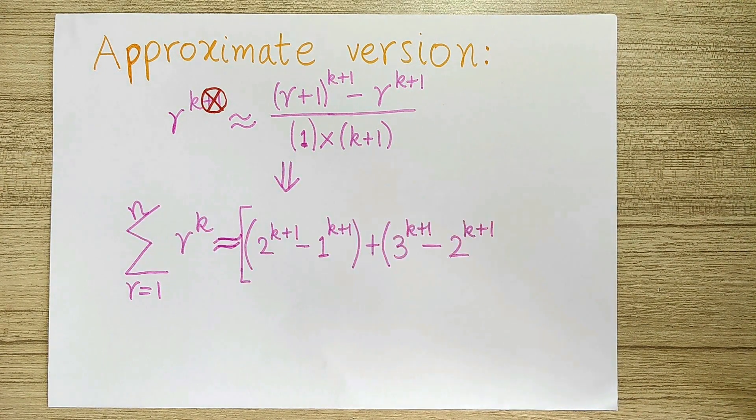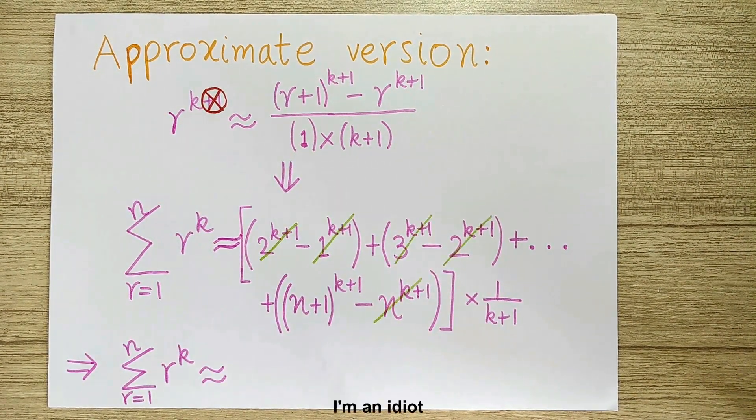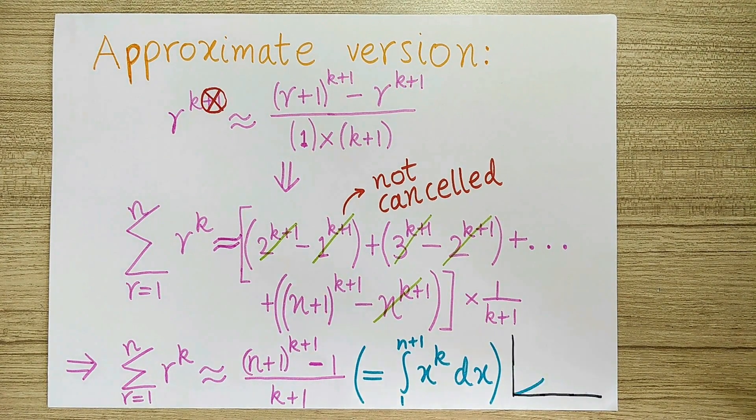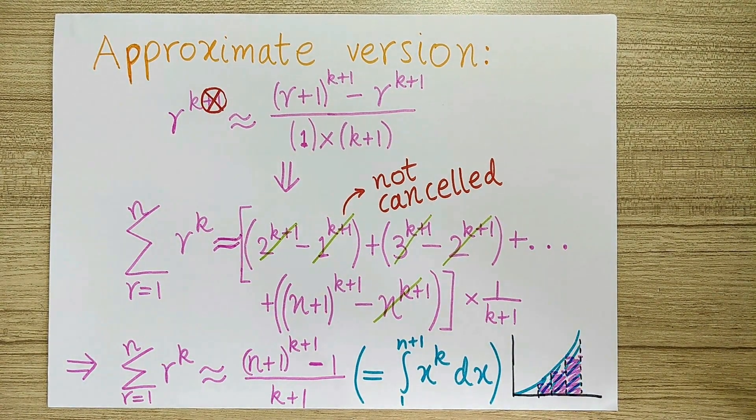Plugging this in gives us a telescoping sum which is very similar to the one which we got previously, and this gives us an approximate formula for the sum which we were looking at. You may notice that this approximate formula can also be written as an integral and this also has a nice geometric interpretation.